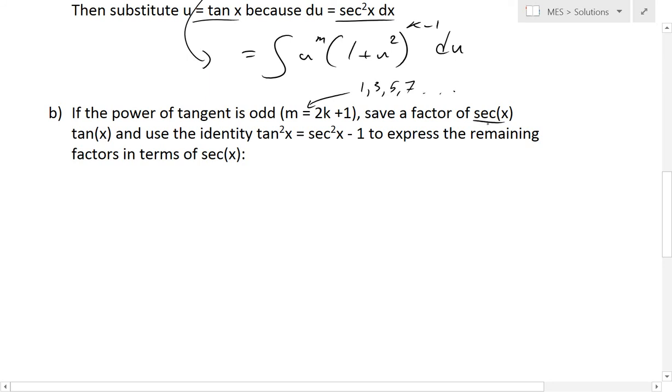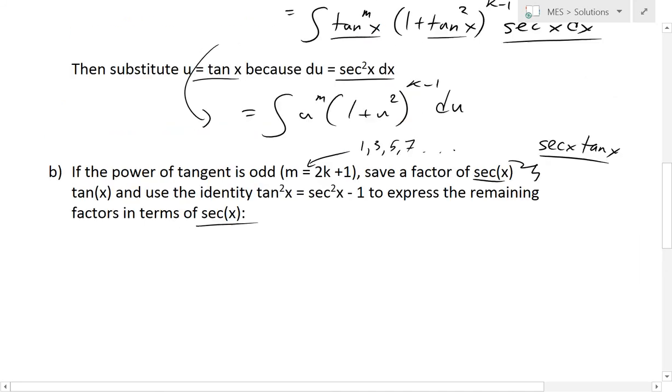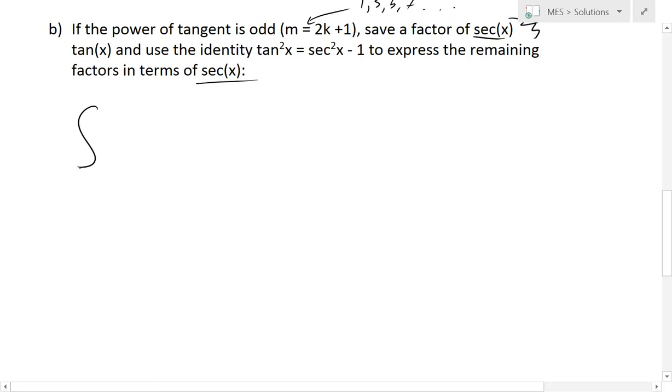For this case we save a factor of secant x tan x together, and use the identity tan²x = sec²x - 1 to express the remaining factors in terms of secant x. This is similar to what we did in step A. We have the integral tan^(2k+1)(x) sec^n(x) dx.